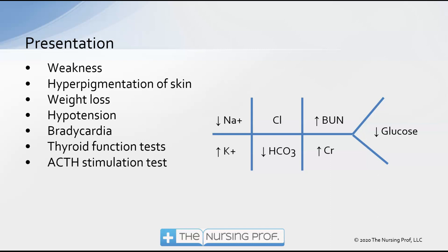Looking at the fishbone diagram used for reporting chemistries, note the key findings in adrenal insufficiency: primarily low sodium and high potassium. Low sodium can lead to cerebral edema and additional complications. High potassium can lead to cardiac dysrhythmias. We may also see acidosis from decreased bicarb, low glucose levels, and a high BUN and creatinine.